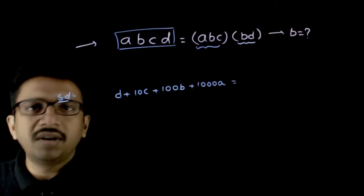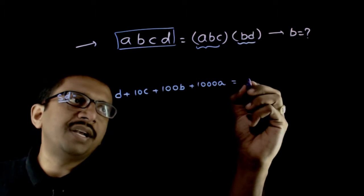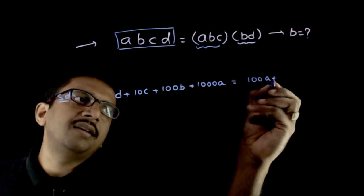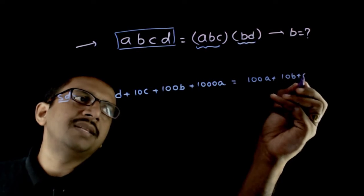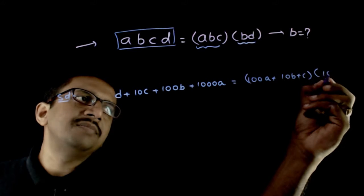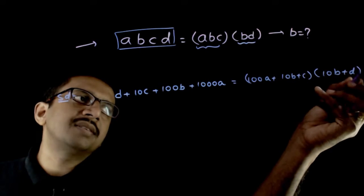This is equal to ABC, which can be written as 100A plus 10B plus C, times 10B plus D.